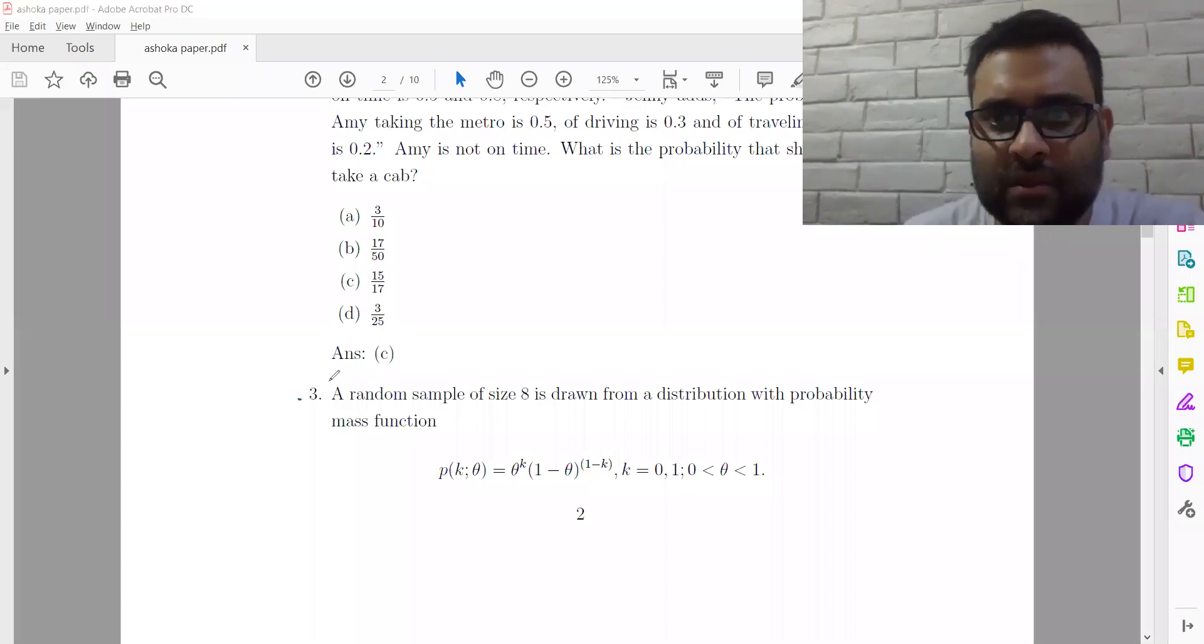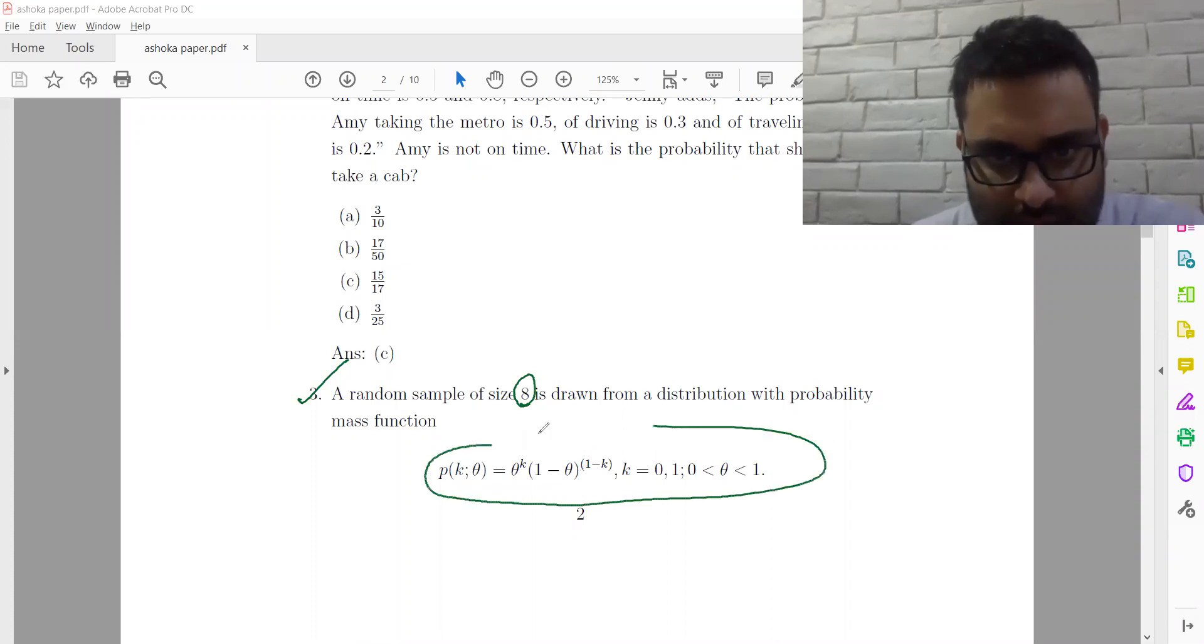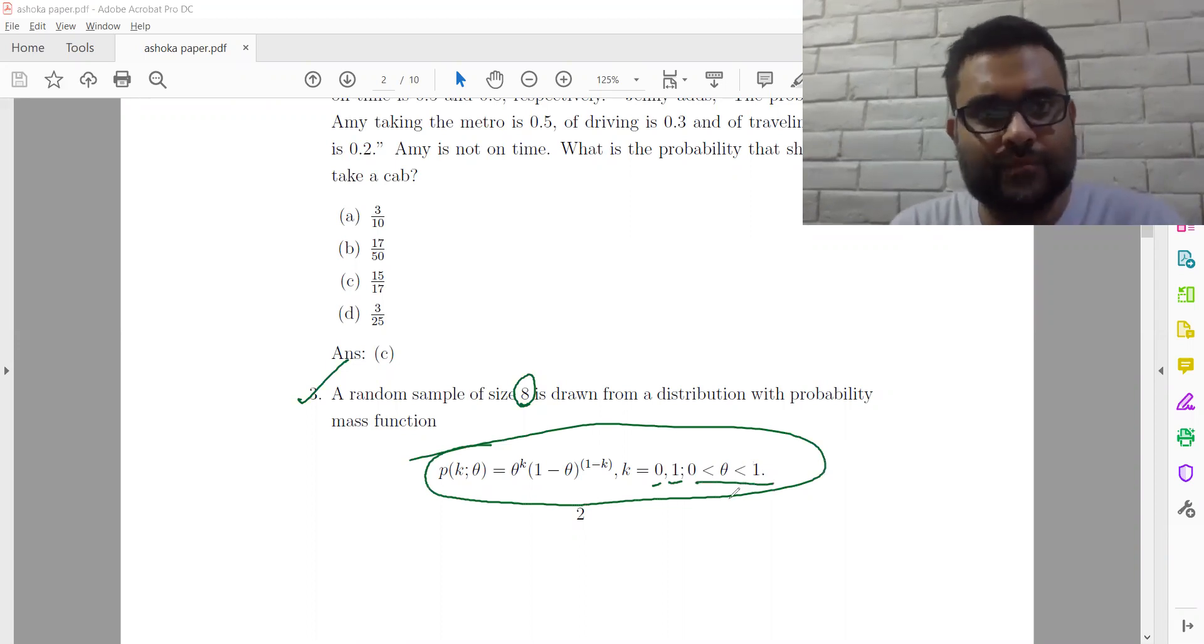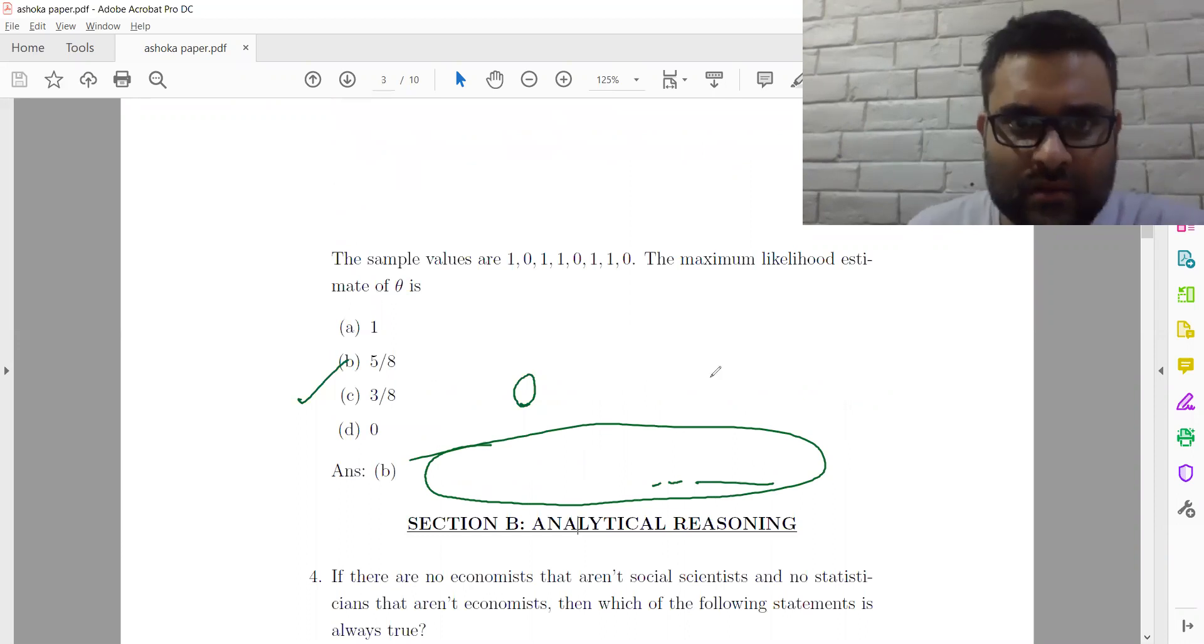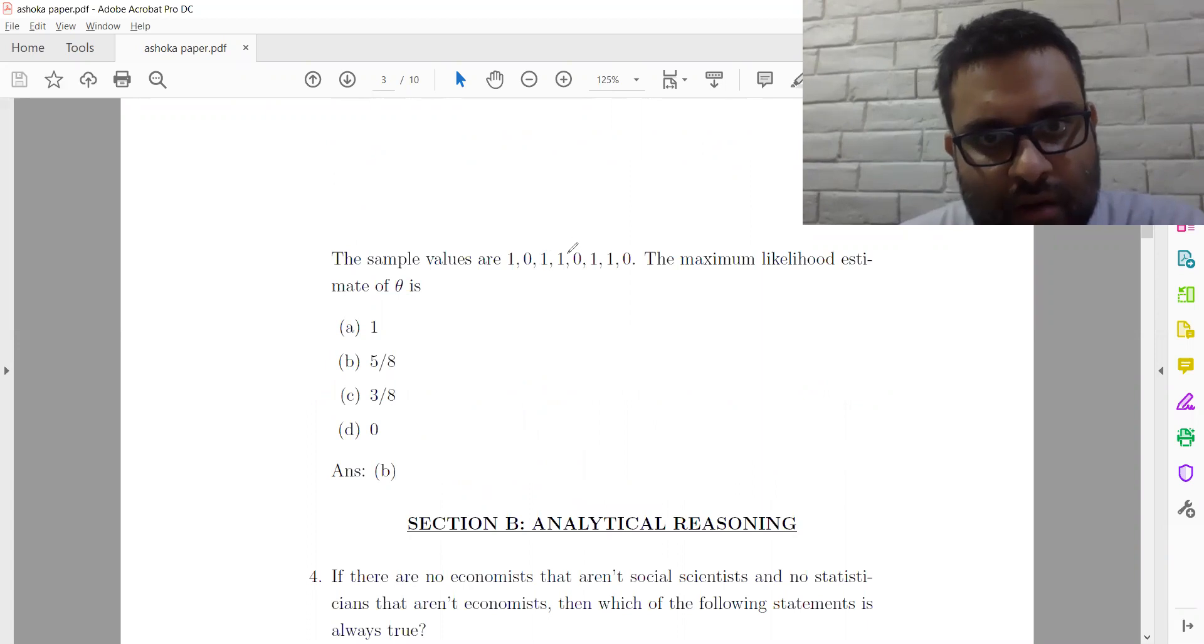Now, let's take a look at question number 3. A random sample of size 8 is drawn from a distribution with the probability mass function. This is the probability mass function where k is equal to 0 or 1 and theta will lie between 0 and 1. The sample values are 1, 0, 1, 1, 0, 1, 1, 0. The maximum likelihood estimate of theta.